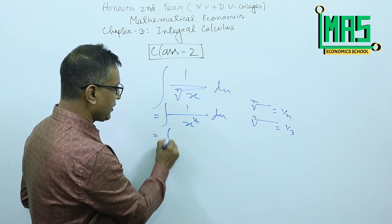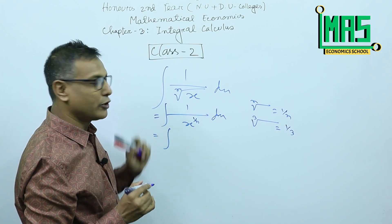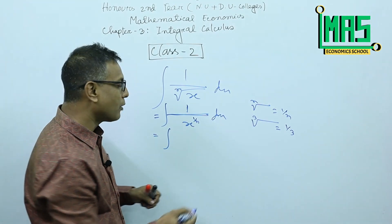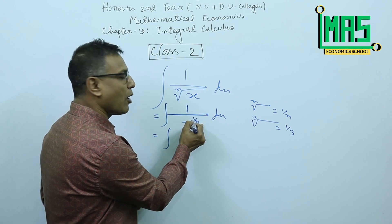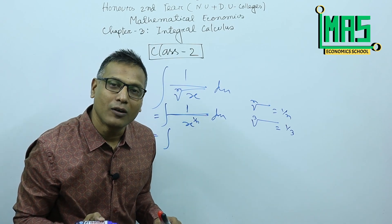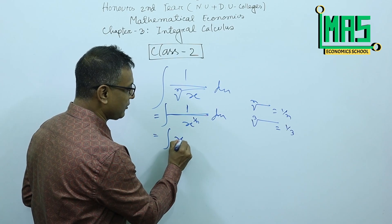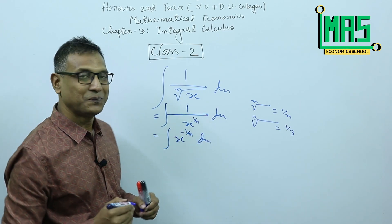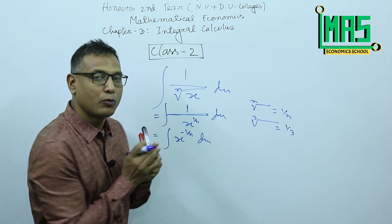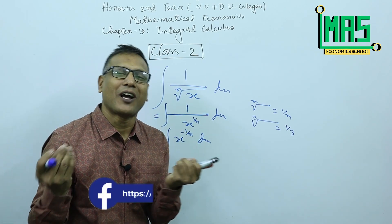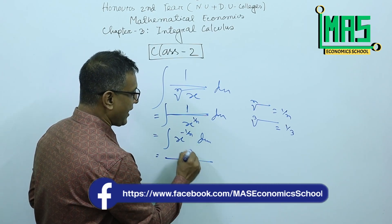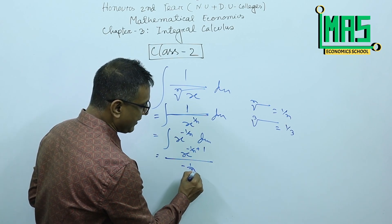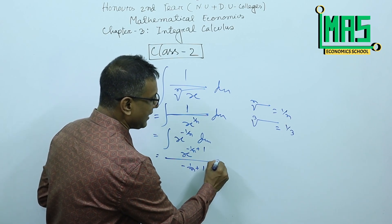It is not the integration sign yet. Using the power rule formula: x to the power 1 by n. What will happen when we apply the formula? The power of x becomes minus 1 by n. So we have the integration of x to the power minus 1 by n dx. Applying the formula: x to the power minus 1 by n plus 1, divided by minus 1 by n plus 1, plus c.